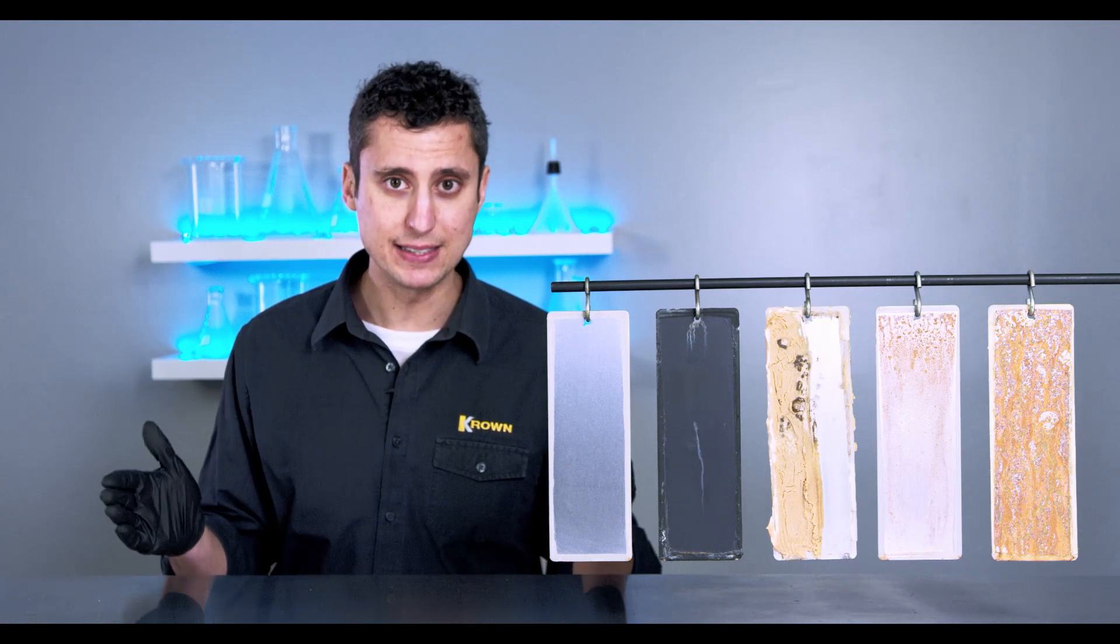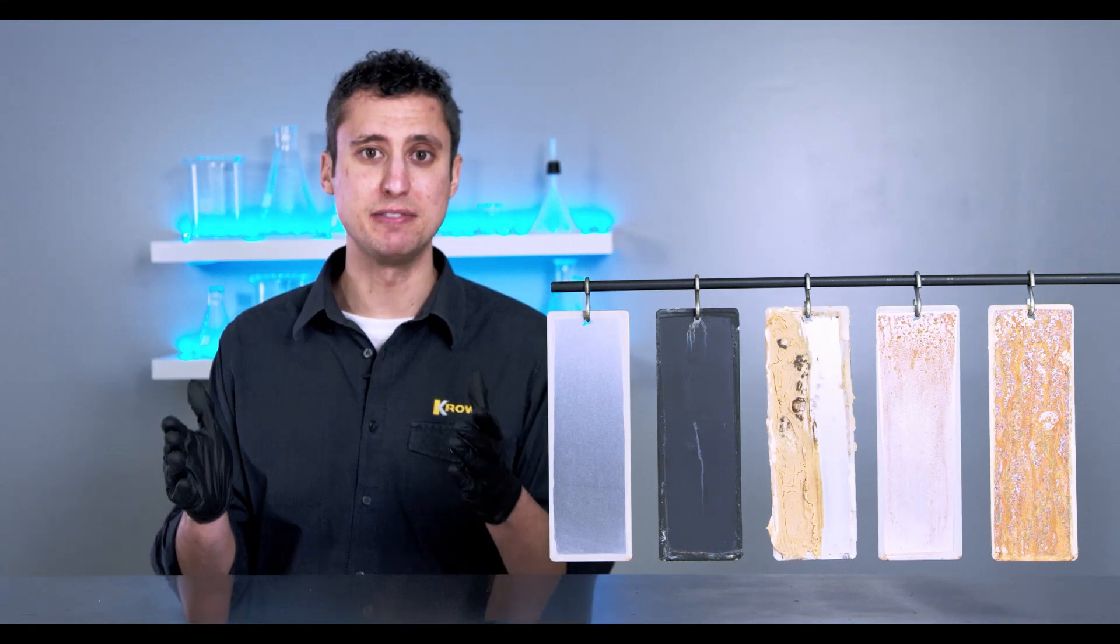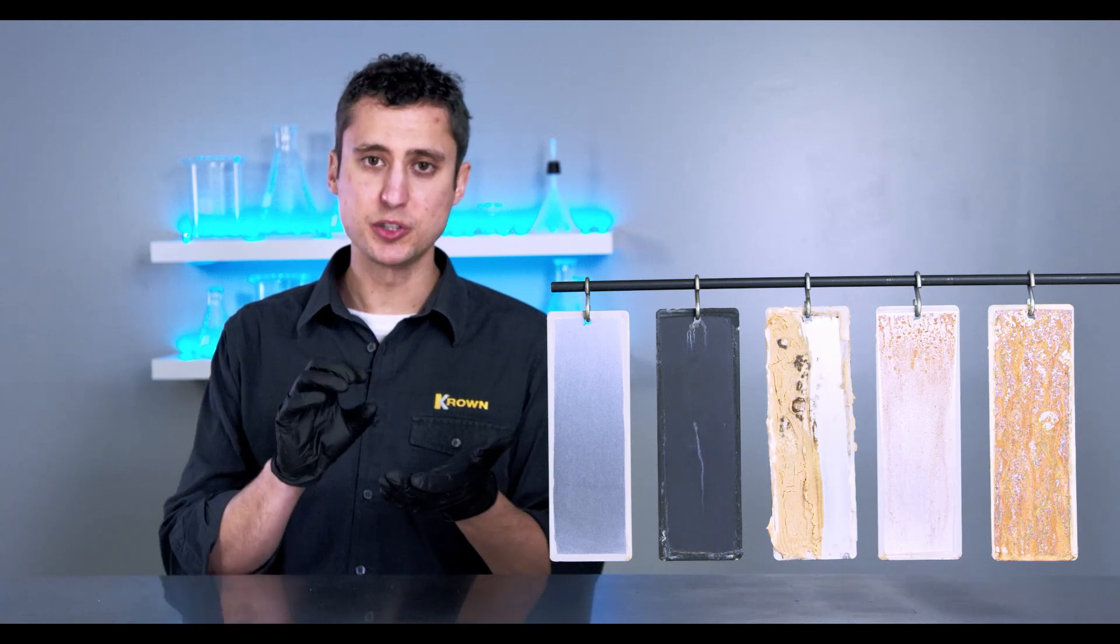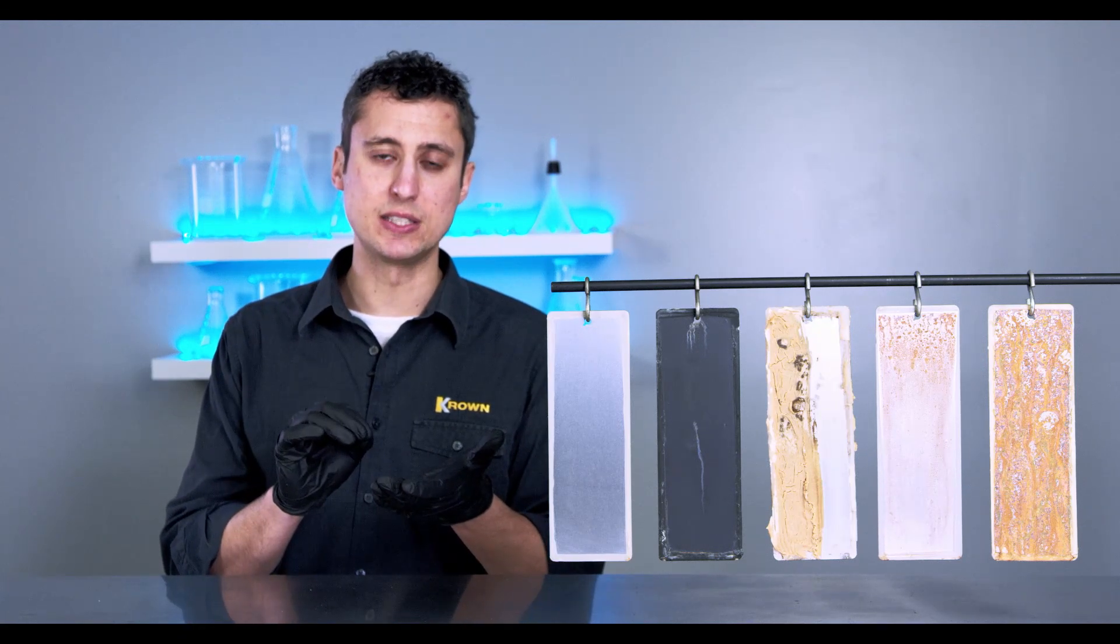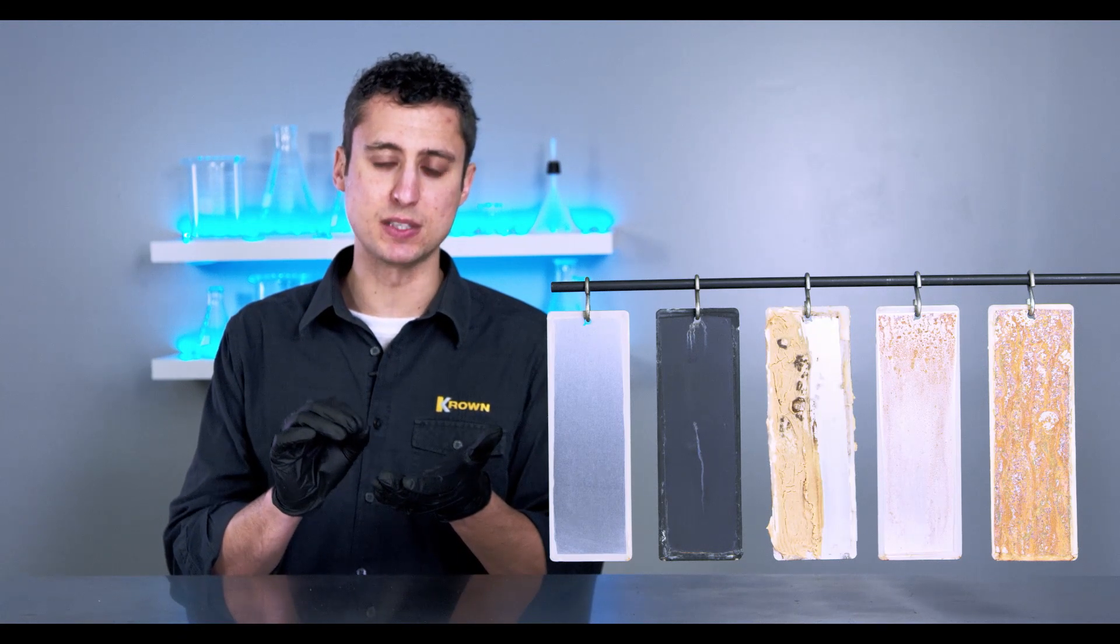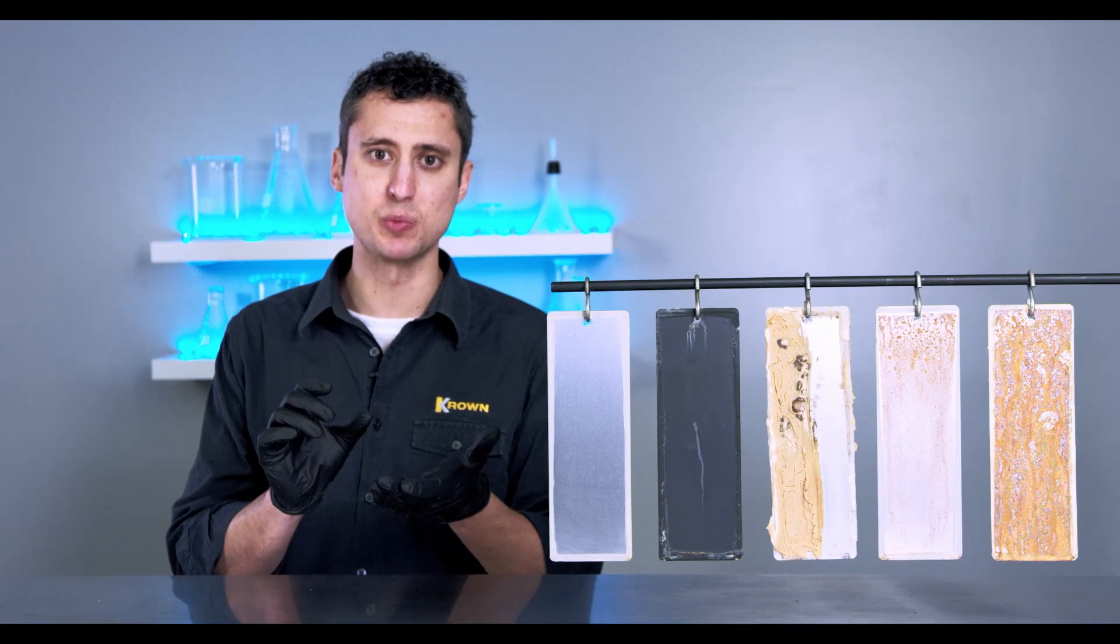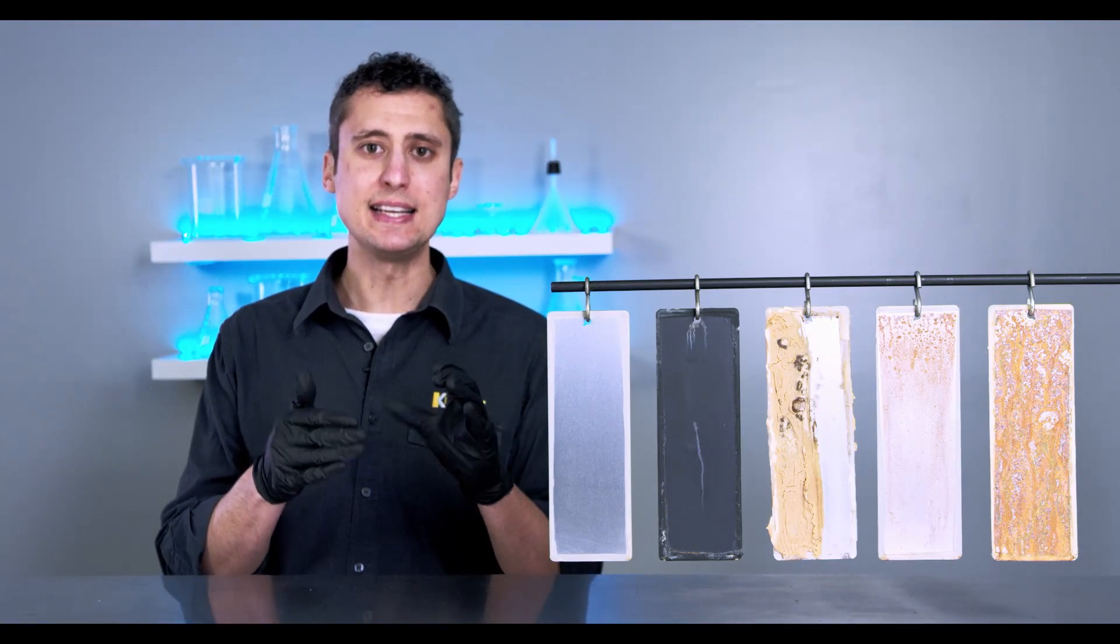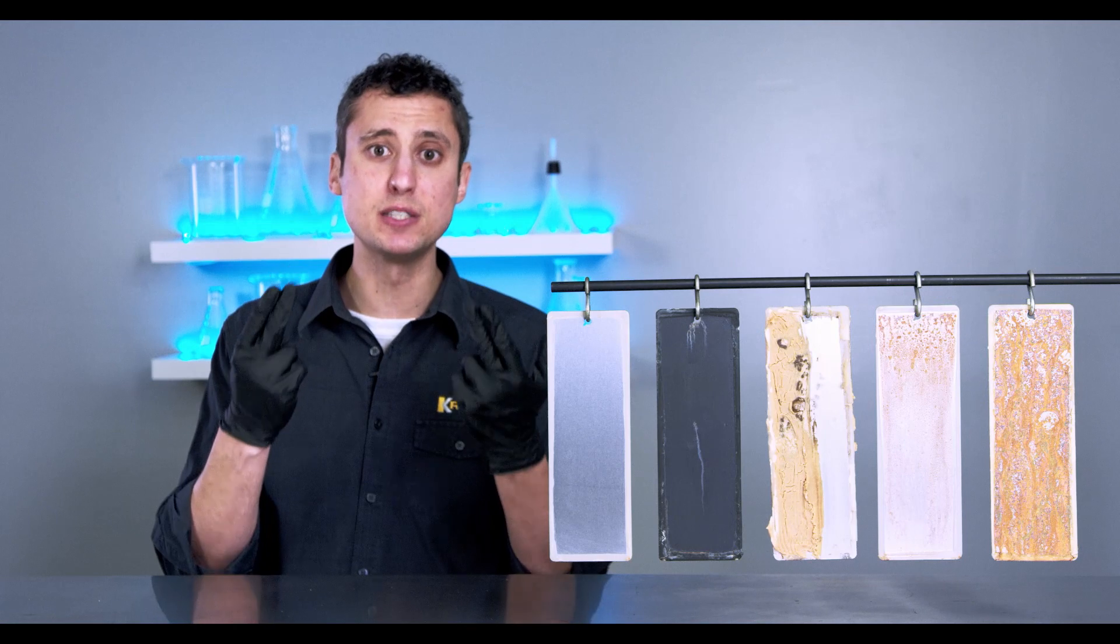There's all sorts of nooks and crannies, there's hidden spot welds and seams, small electrical components, as well as the inside of door panels, these areas that you can't see are invisible to the naked eye.